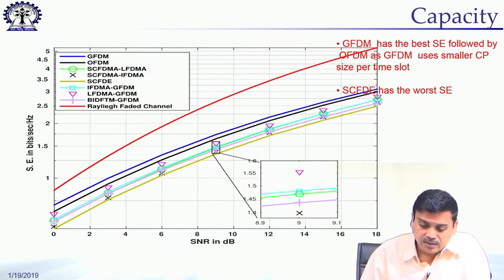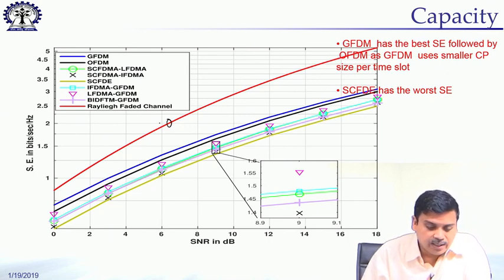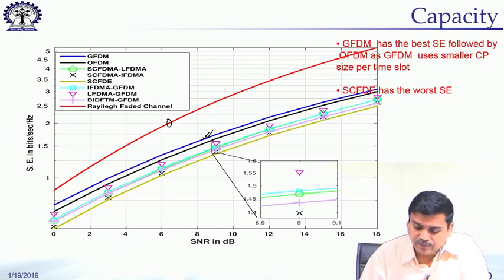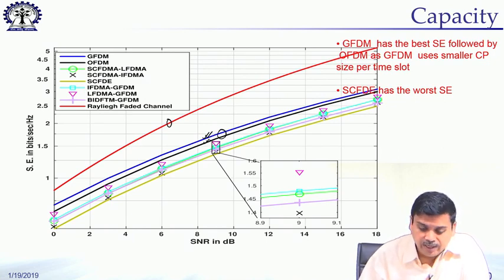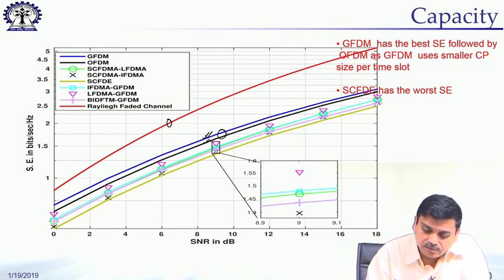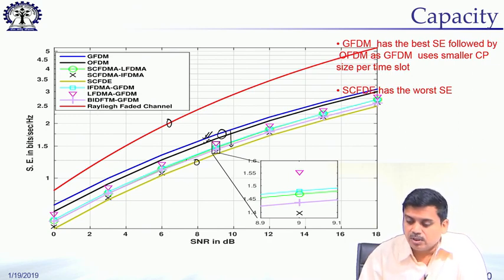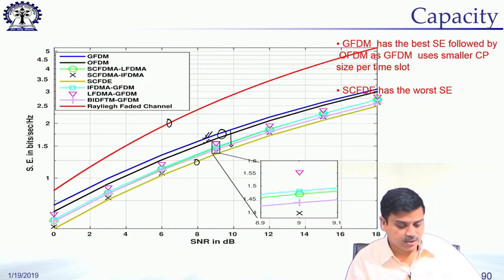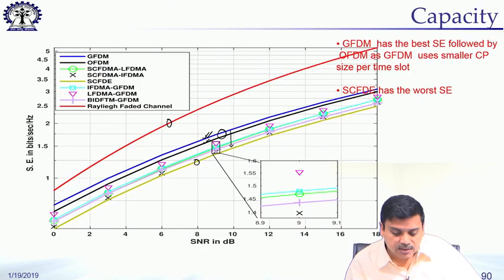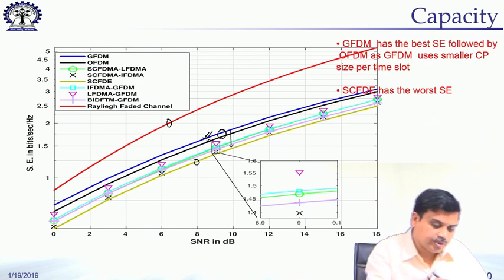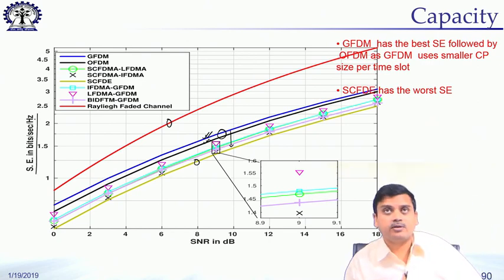In terms of capacity evaluation, comparing against Rayleigh fading channel capacity, we find GFDM provides the highest capacity, followed by OFDM — with the gap possibly due to CP loss. Then we have SCFDMA and at the bottom SCFDE. Overall, GFDM performs better in frequency-selective fading channel, under CFO, and has the highest spectral efficiency in bits per second per hertz compared to all other schemes.